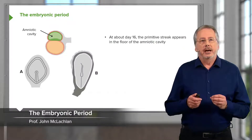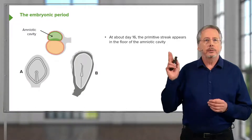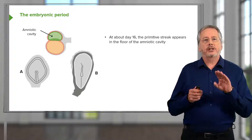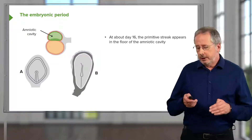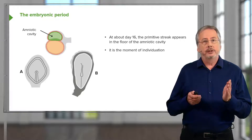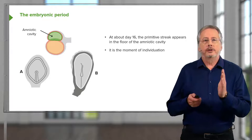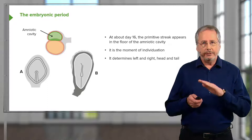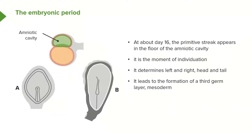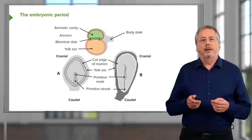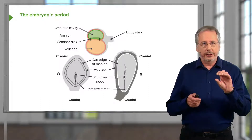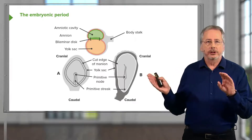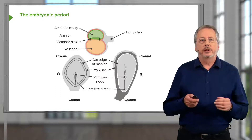Looking at some of the early stages: in this diagram we can see the amniotic cavity in green on top and the yellow yolk sac below. If we were inside the amniotic cavity looking down at the floor, we would see the primitive streak forming, as described in more detail in the lecture on gastrulation. This is the time of individuation — when the individual is formed and twins can no longer form — and it also determines the main body axis: left and right, head and tail. It also leads to the formation of a third germ layer, the mesoderm. We can see the amniotic cavity, the yolk sac, and between the two the bilaminar disc in which the embryo will begin to form, with the primitive streak determining where the main body axis is.